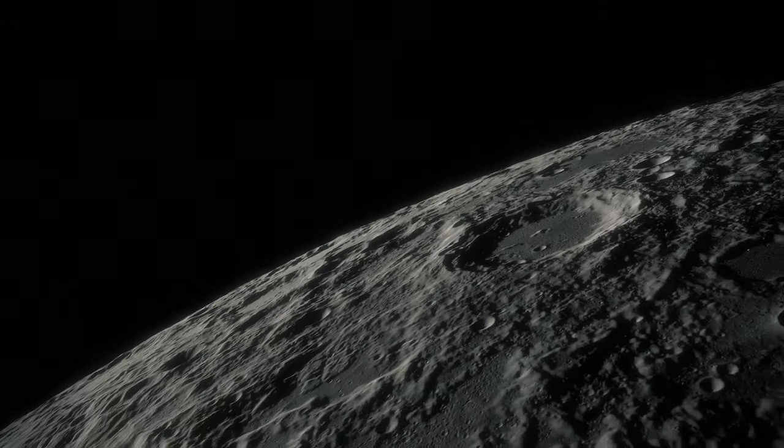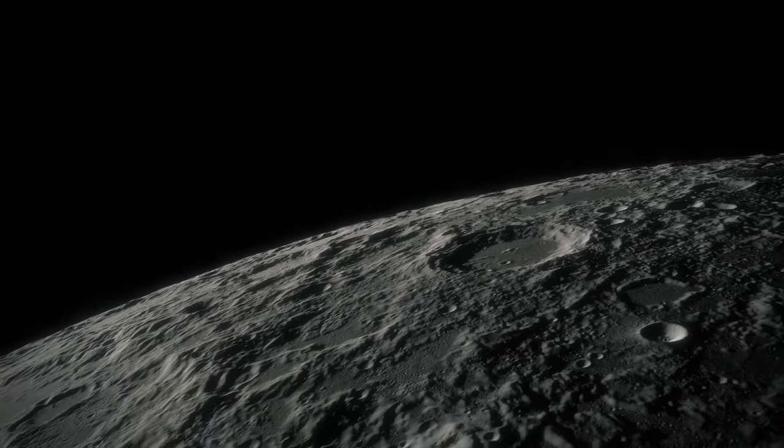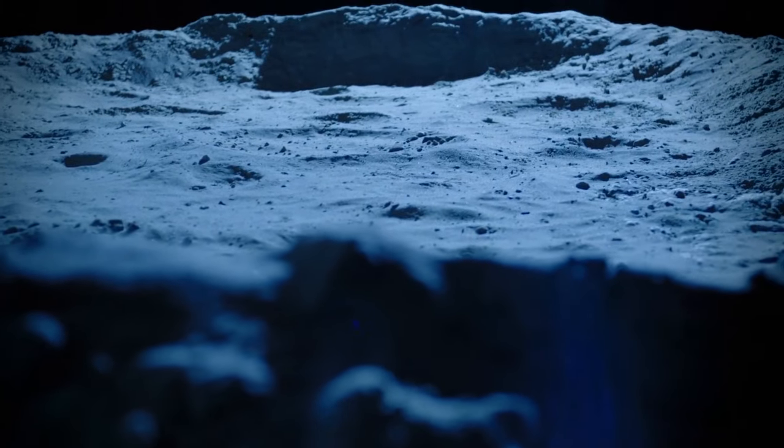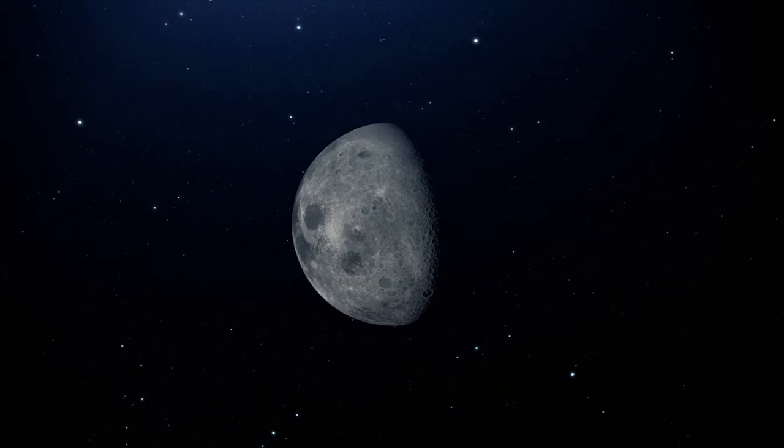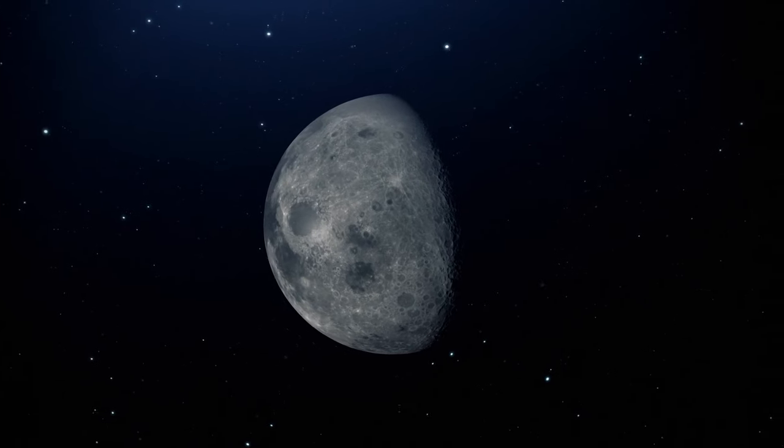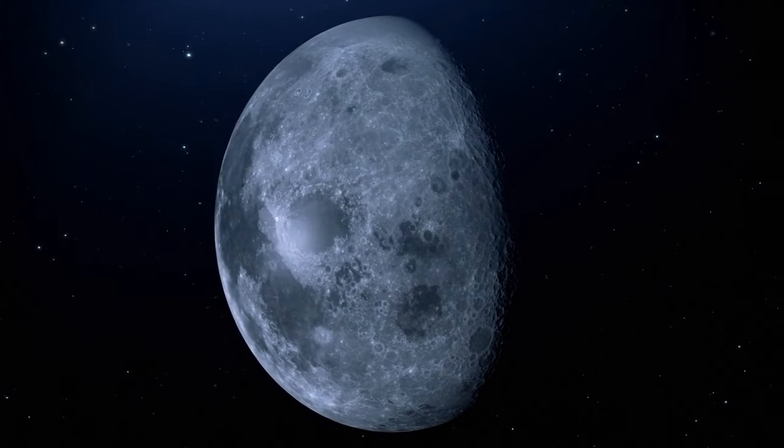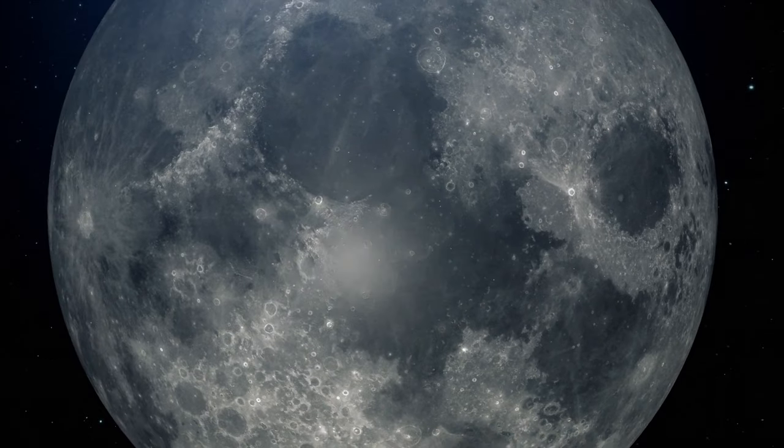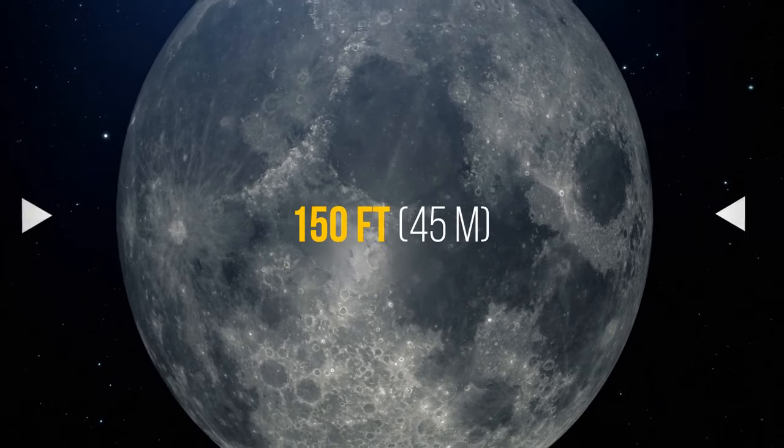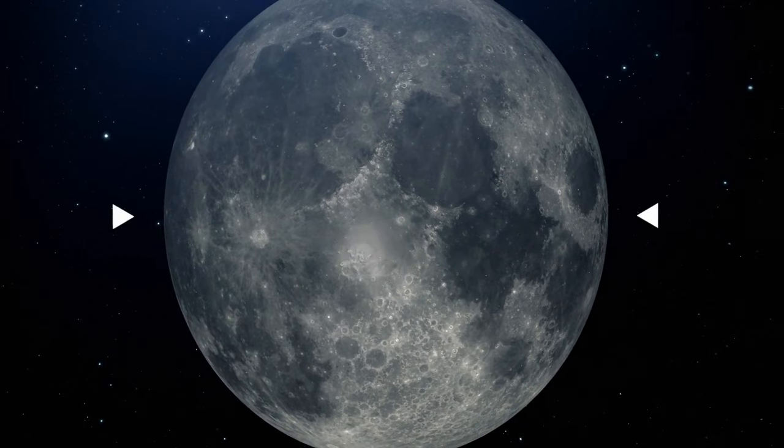Even though the Moon's surface is mostly dormant, Earth's natural satellite still experiences moonquakes. One theory suggests that they may be happening because the Moon is shrinking as its insides are cooling. Scientists say that the Moon has become around 150 feet skinnier than it used to be several hundred million years ago.